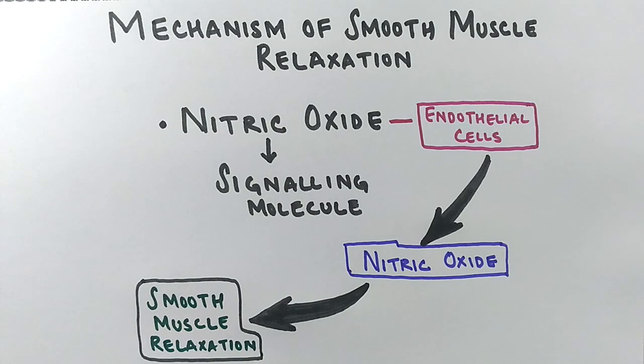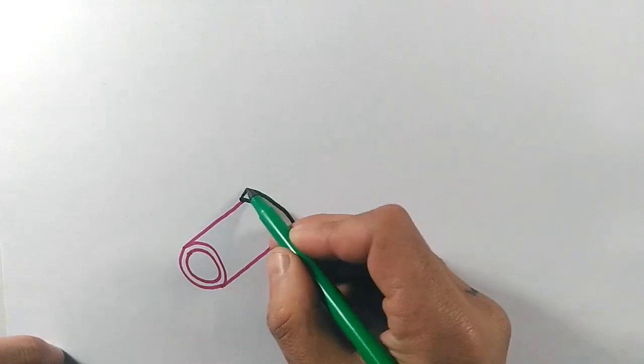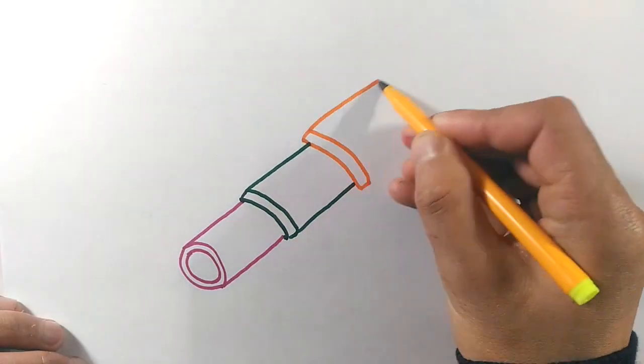First of all, let's see the structure of blood vessels so that we know how this nitric oxide produced by endothelial cells jumps into smooth muscles for relaxation.